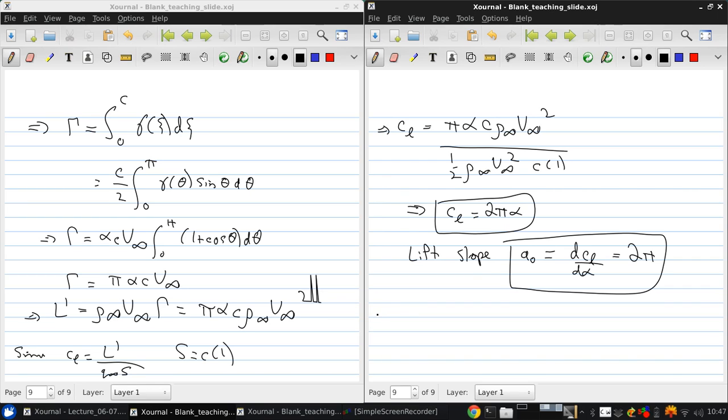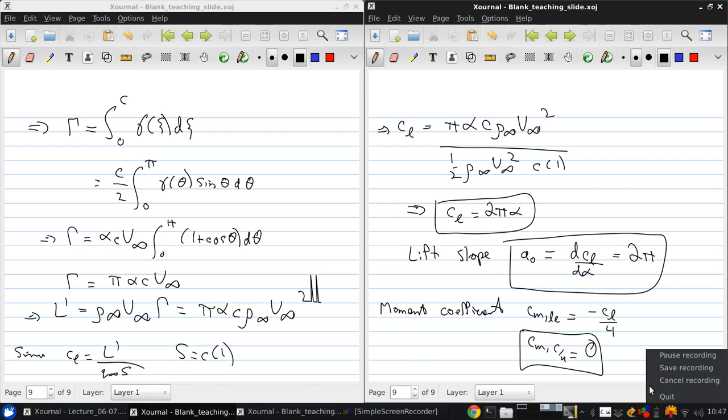From the textbook, we can also show that the moment coefficient c_M at the leading edge is negative c_L over 4, and the moment coefficient about the quarter chord point is zero. So for a thin symmetric airfoil, this means that the quarter chord point is both the center of pressure and the aerodynamic center.